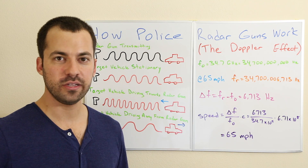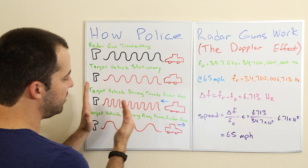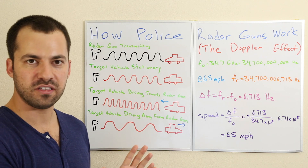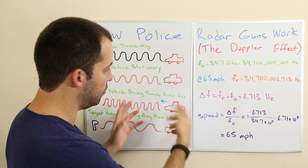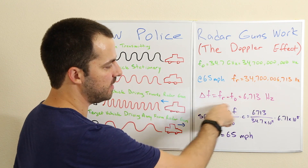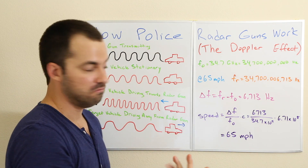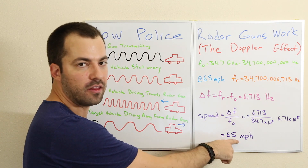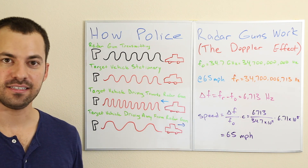And that's really all a radar gun is doing. It's taking a look at the change in frequency due to the movement of the vehicle, noticing what that change in frequency is, plugging it into a simple calculator, and then displaying that number on the back of the radar gun. That's it.